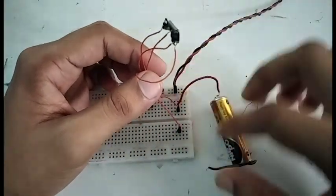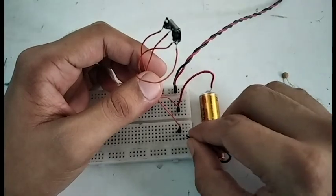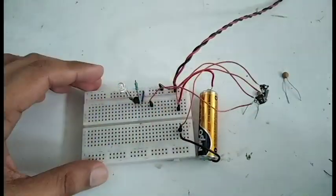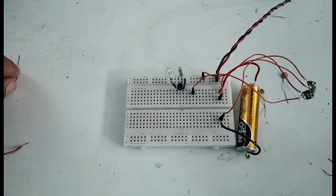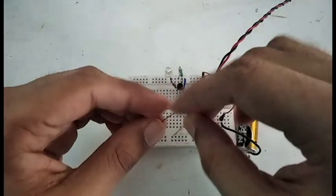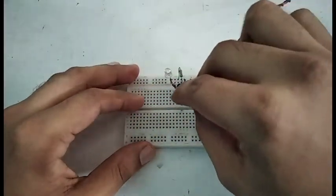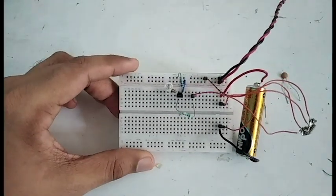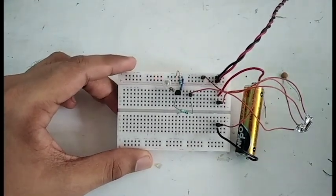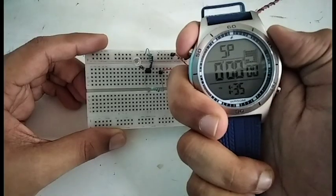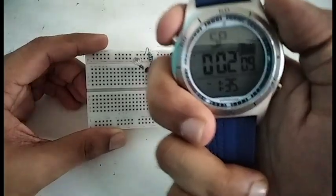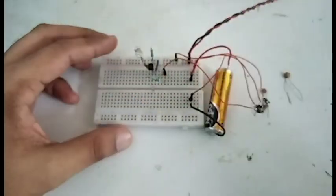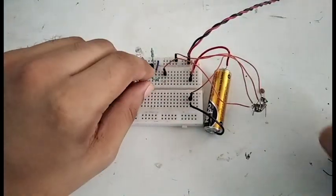And now the resistor which goes from the output line to the base—you can see that the LED is flashing after two seconds. So it's two seconds. I'm going to replace this resistor with a capacitor.